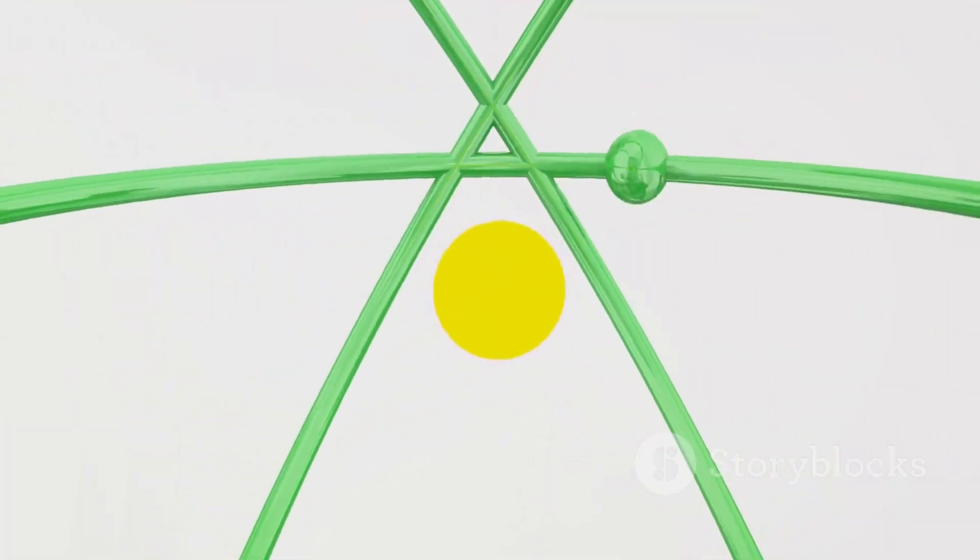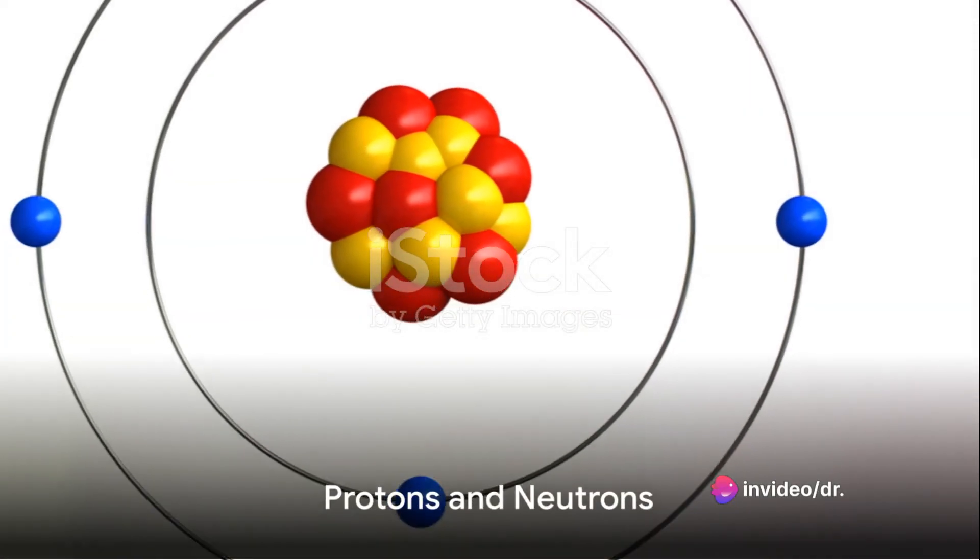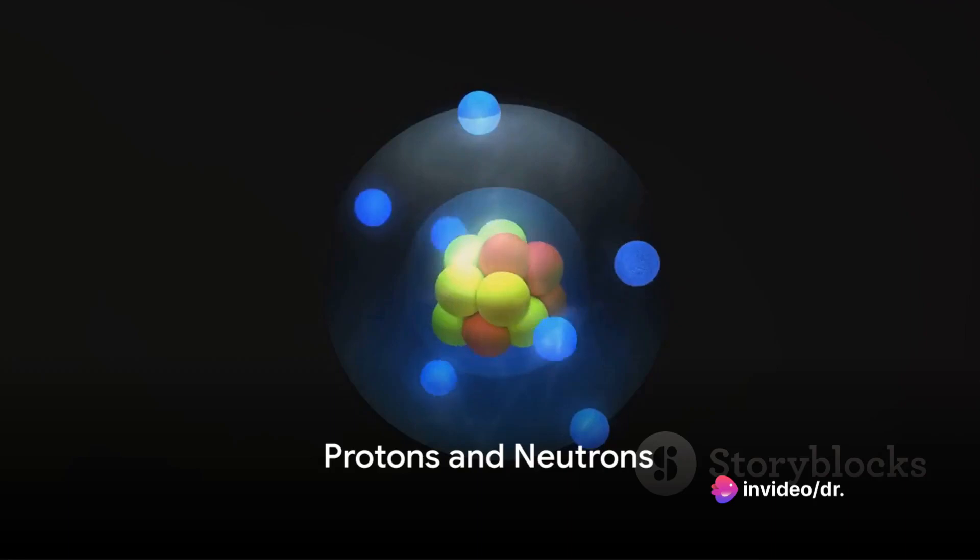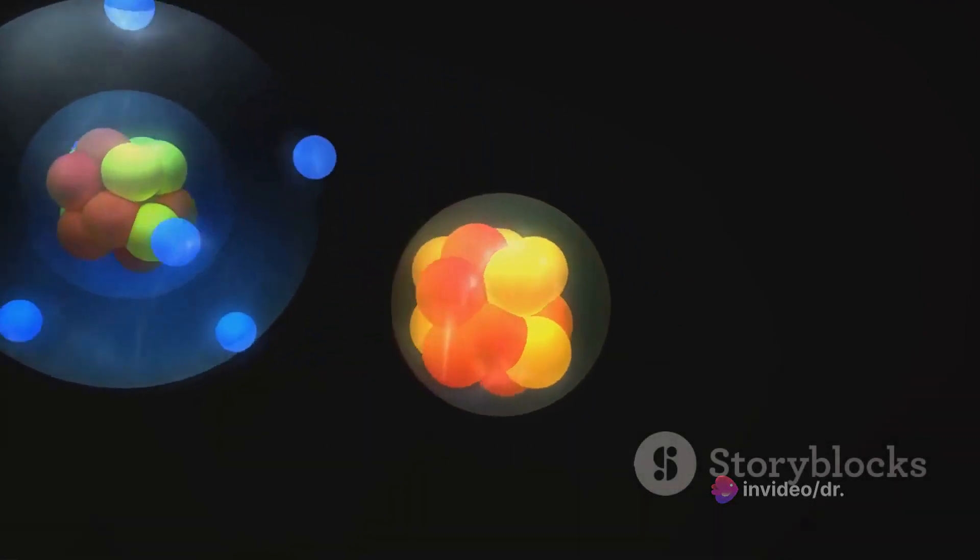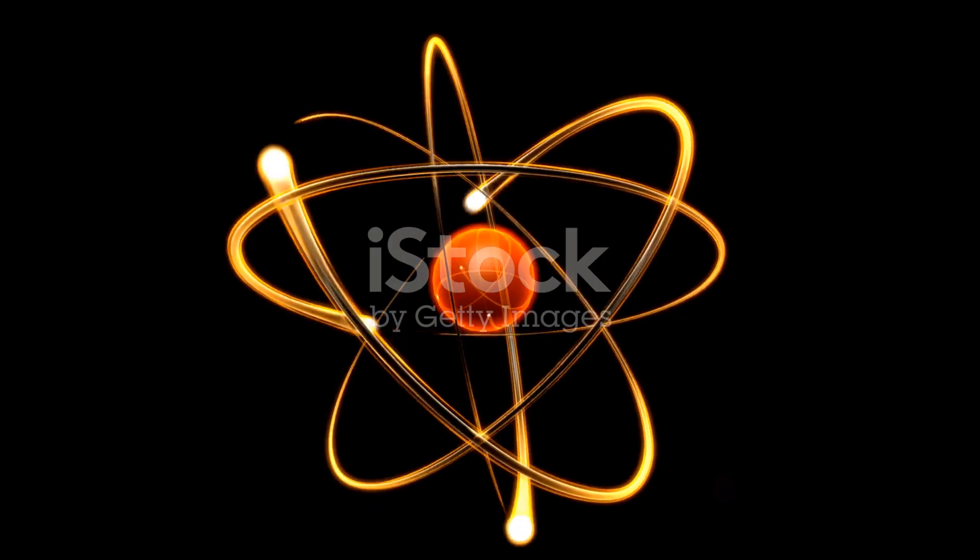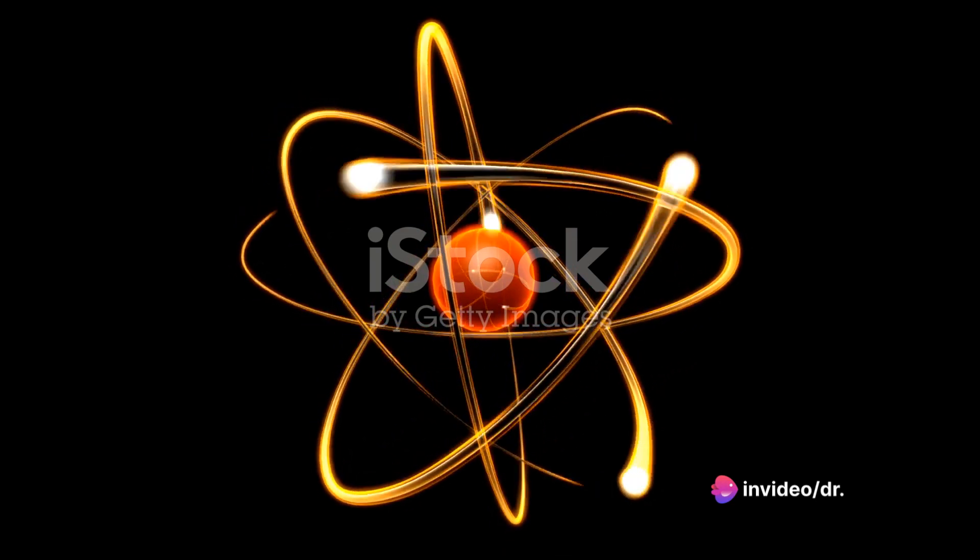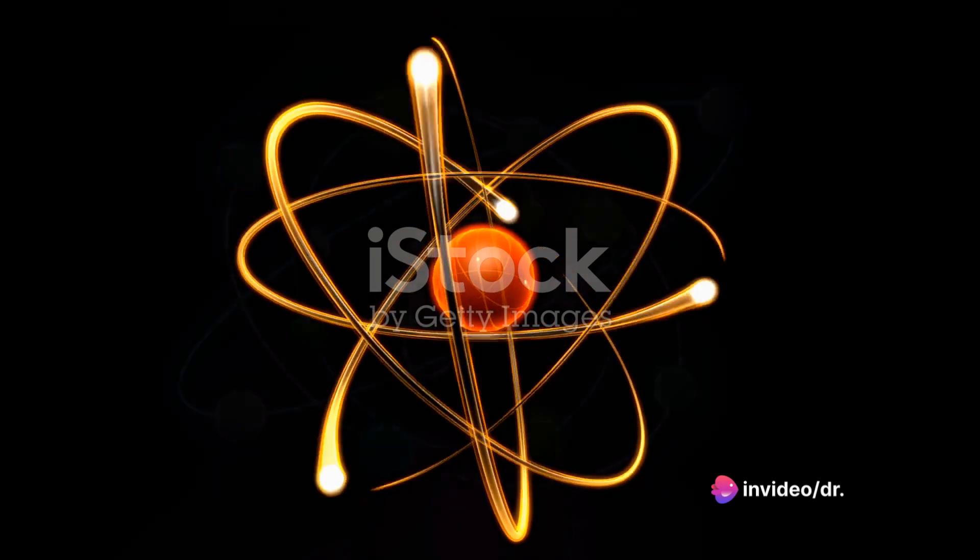This nucleus is made up of two types of particles: protons and neutrons. Protons are positively charged particles, like the sun's rays radiating positive energy. On the other hand, neutrons are neutral—they have no charge. They're like the cool, calm, and collected planets, indifferent to the energy around them.